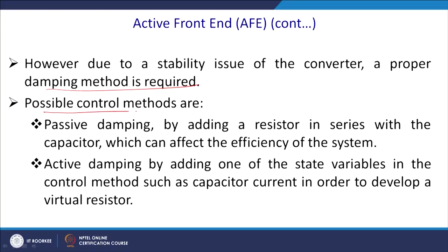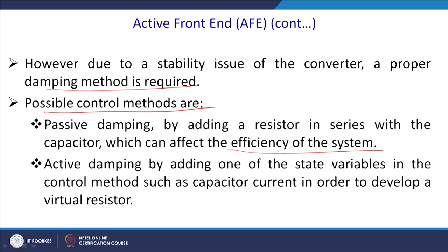The possible control techniques are passive damping — adding a resistance in series with a capacitor — which affects the efficiency of the system. The losses in the resistance are simply heat with no useful purpose, and a high resistance value also leads to higher THD. Active damping involves working with the control system by adding one extra state variable, such as the capacitor current, in order to develop a virtual resistor.